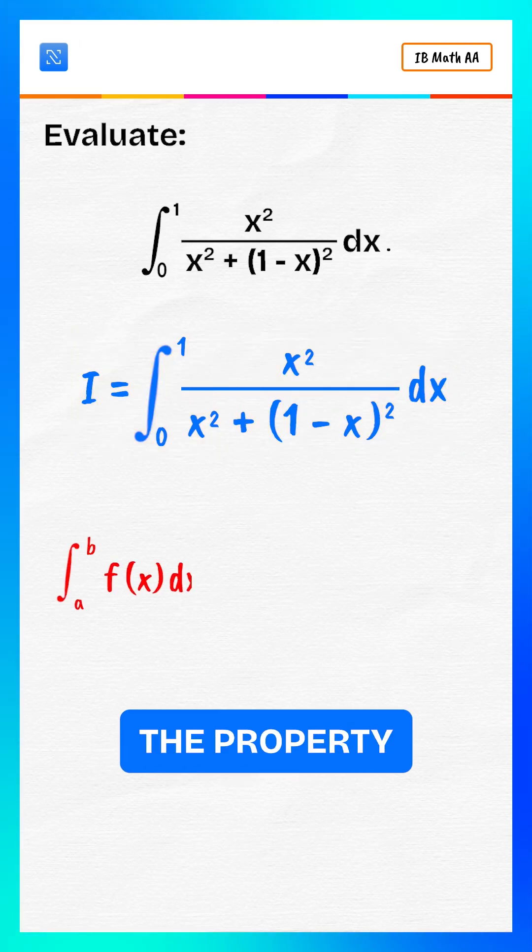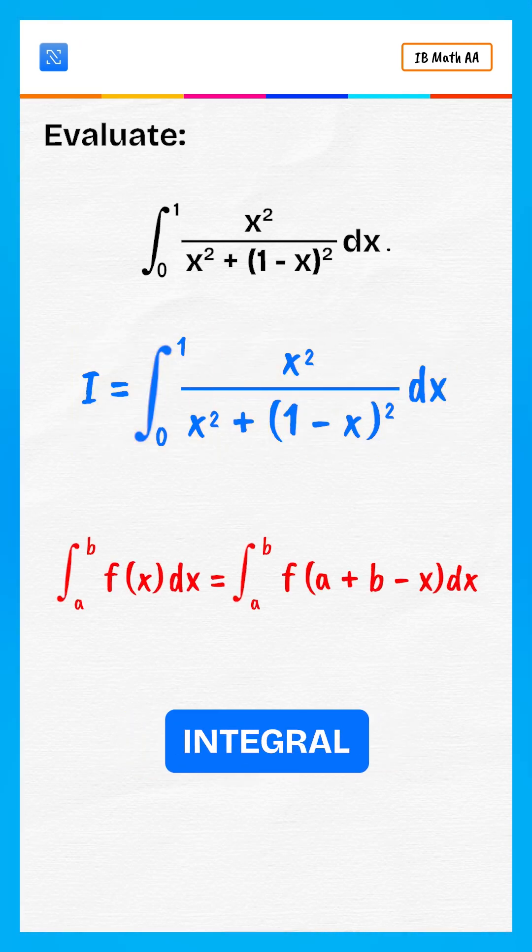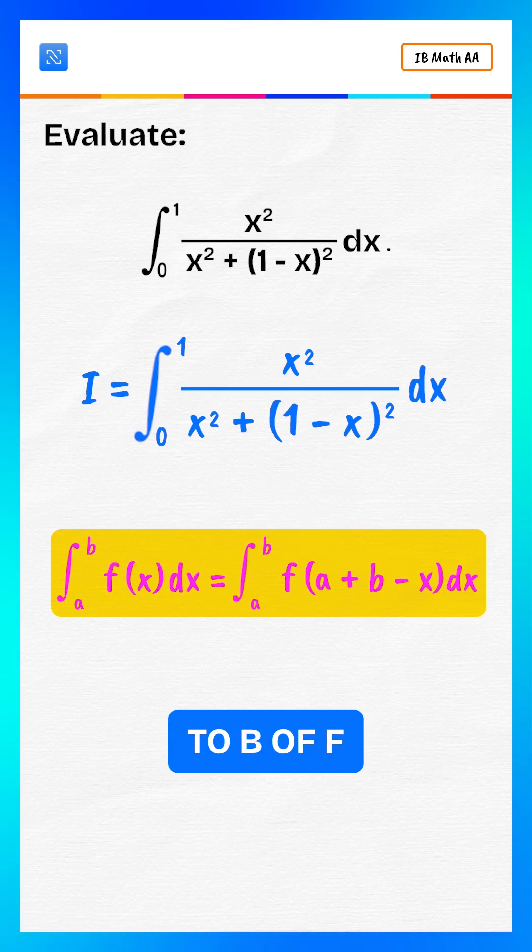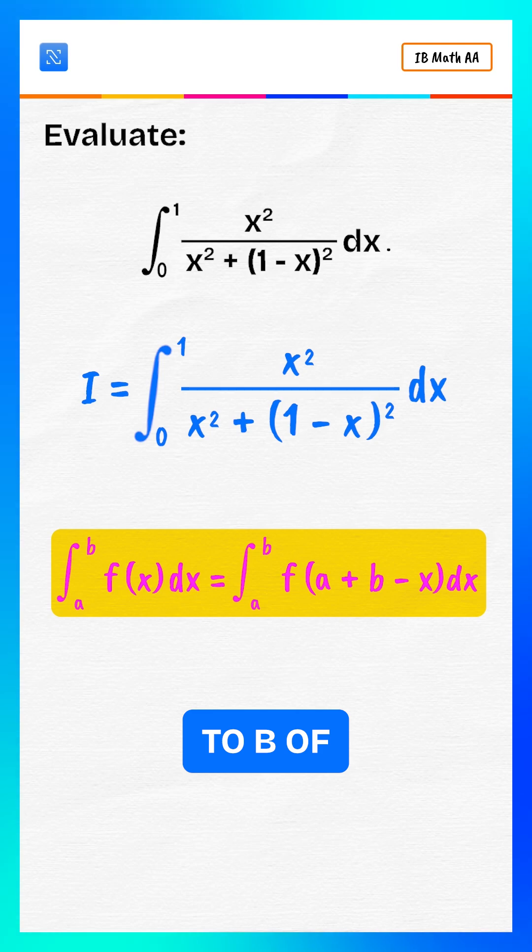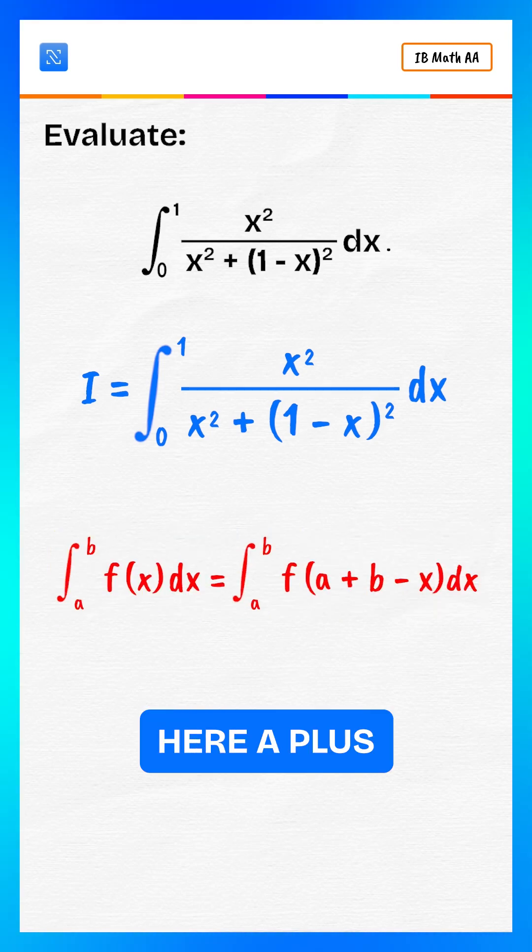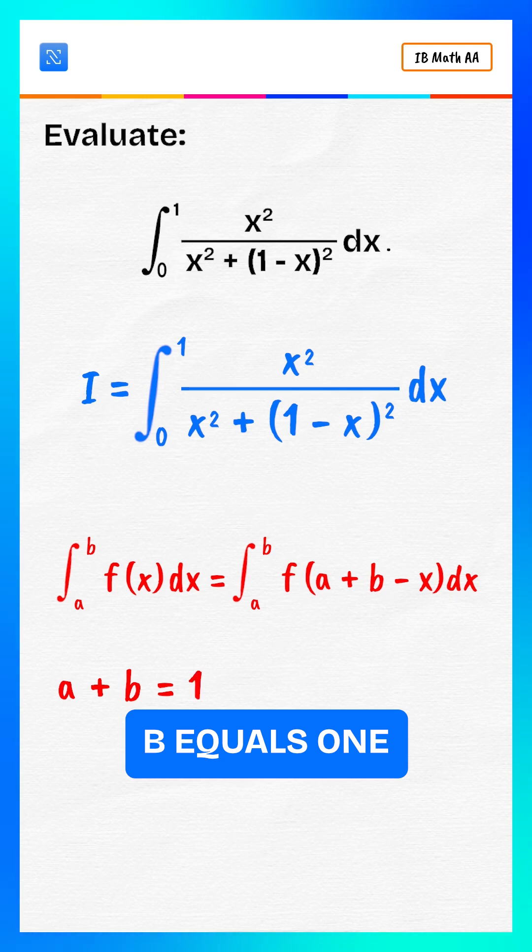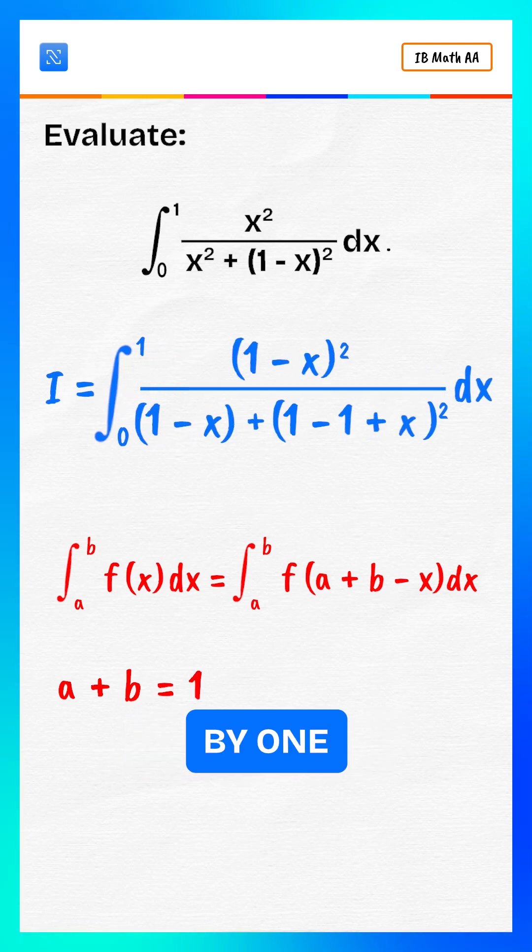Now use the property of definite integrals. Integral from a to b of f of x dx equals integral from a to b of f of a plus b minus x dx. Here, a plus b equals one. So replace x by one minus x.